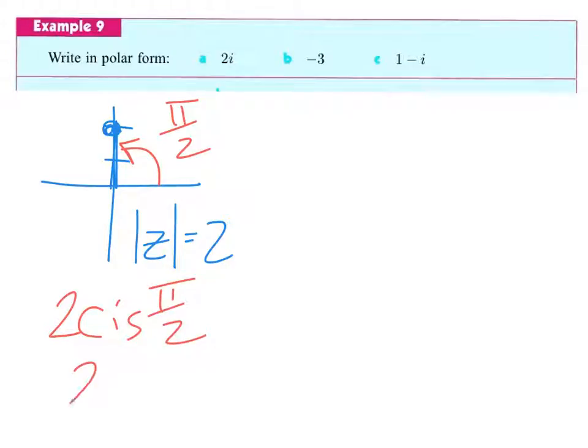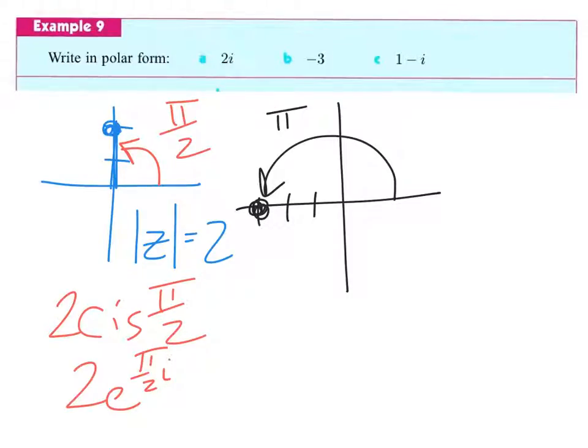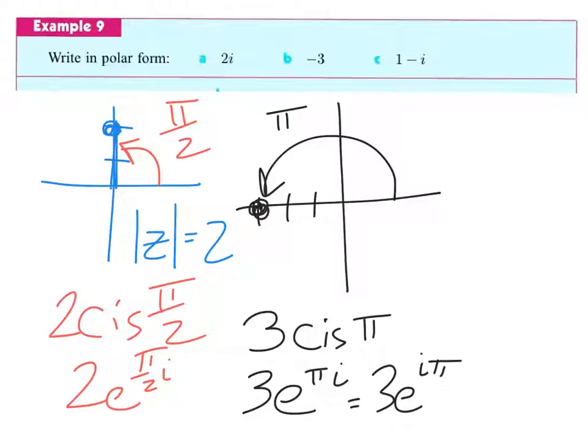Or we could say it's 2 e to the pi over 2i. The next one has negative 3. Well, that's only on the real axis. And so it's gone three units away. But this angle right here is pi. So this is 3 cis pi. Or you could say it's 3 e to the pi i, or i pi, 3 e to the i pi.